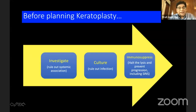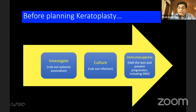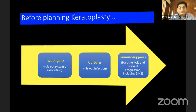Before we plan keratoplasty, we should investigate to rule out any systemic association. We should culture to rule out any infection and immunosuppress these patients if required to halt the lysis and prevent progression.